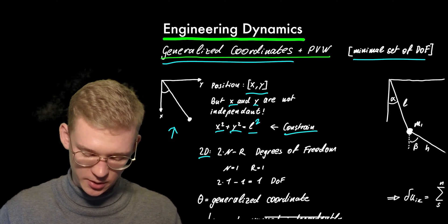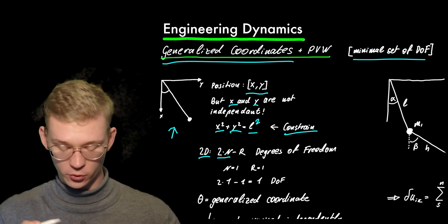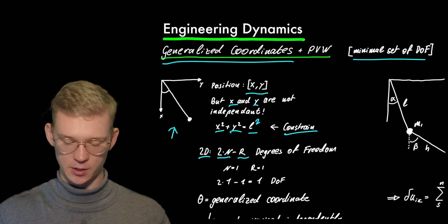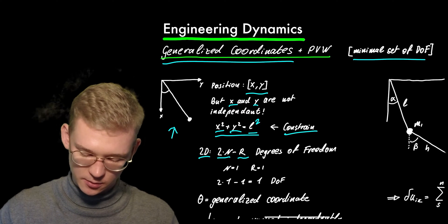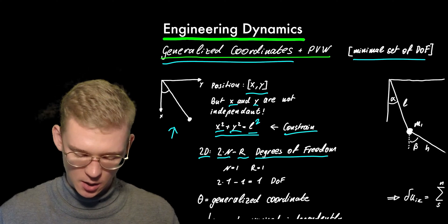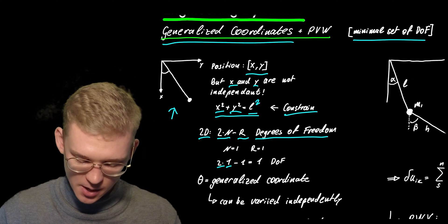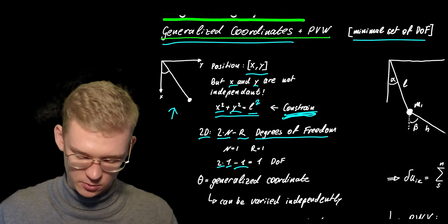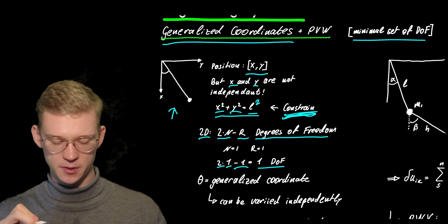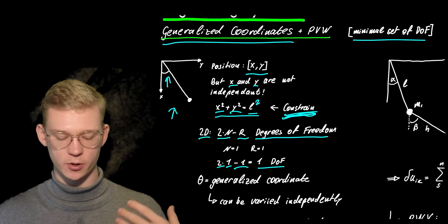If we are in 2D and talking about point masses, we have 2 times n degrees of freedom for each point, but we have to subtract the constraints we are given. So in our case with a pendulum, we have 2 times one body, and we have one constraint, so we are left with only one degree of freedom.